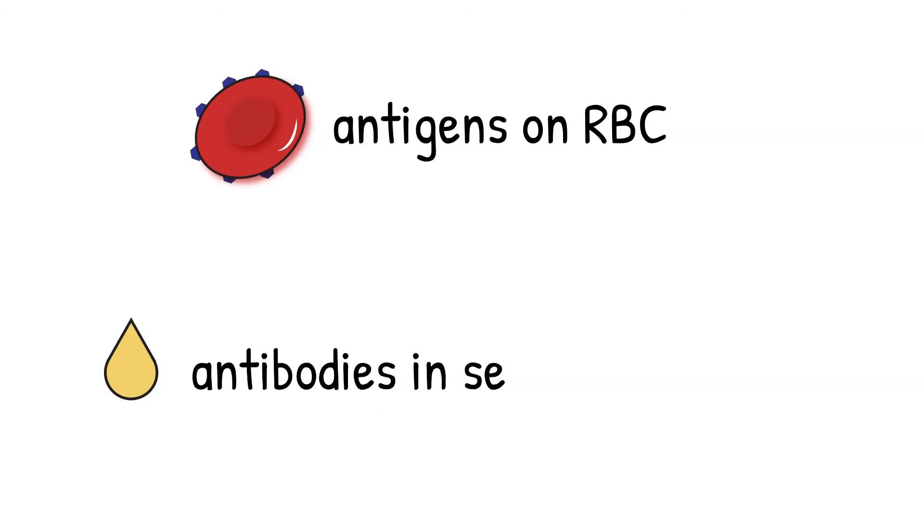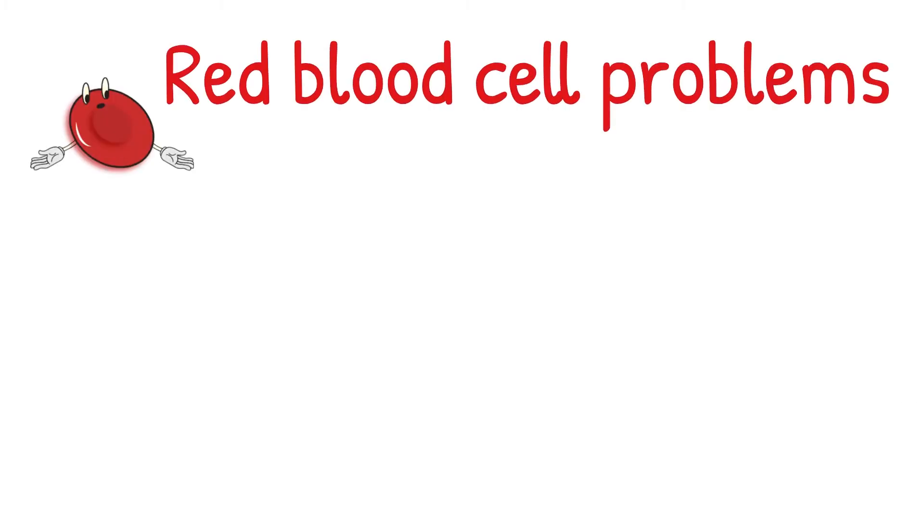If you keep these two things straight, then you will have an easier time understanding this concept. Antigens on red blood cells, antibodies in serums or plasma. Let's start with red blood cell problem. Red blood cell problem is when the red blood cells give an unexpected result. This can happen for many reasons.